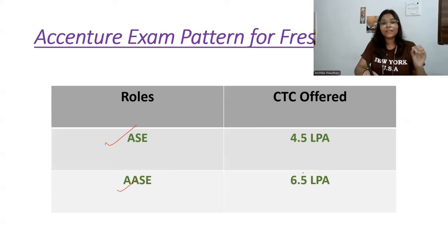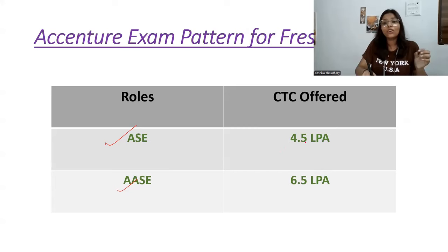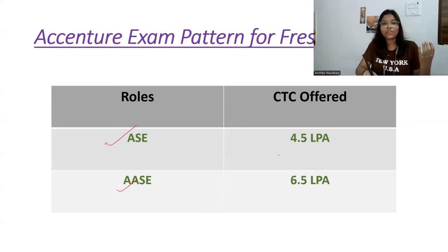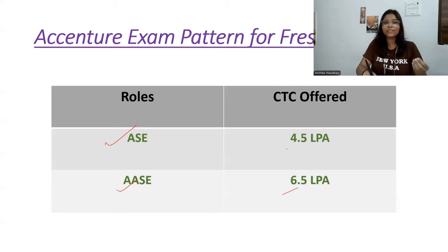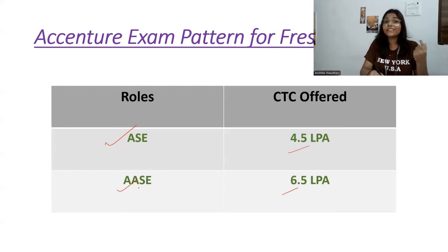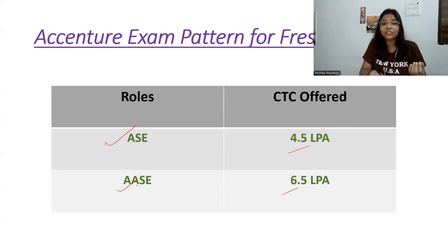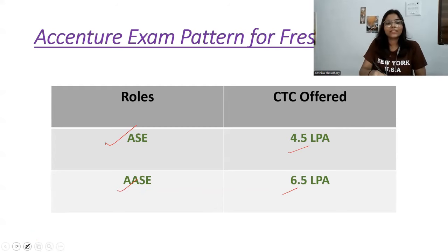The exam pattern will be the same for both roles, but your overall performance will determine the CTC. If you perform very well, you will get 6.5 LPA, but if your performance is average, you will get 4.5 LPA. Of course, your technical part should be really good for the ASE role.